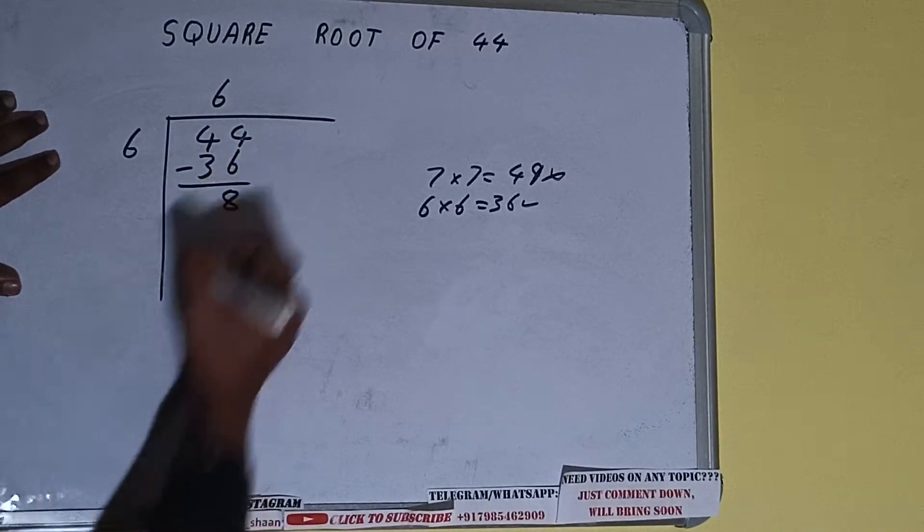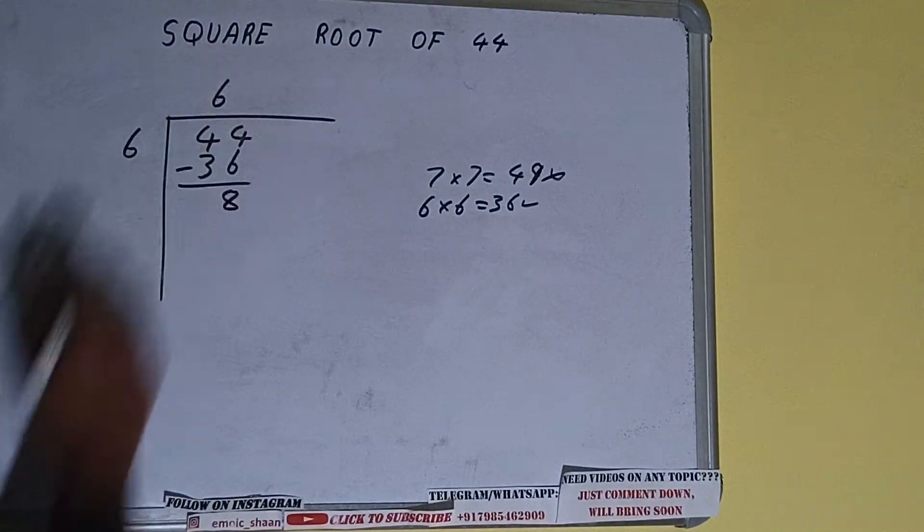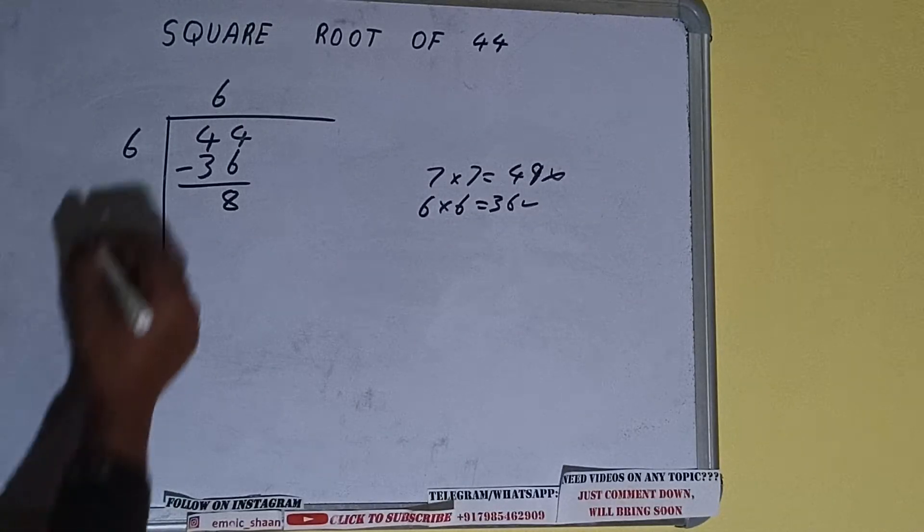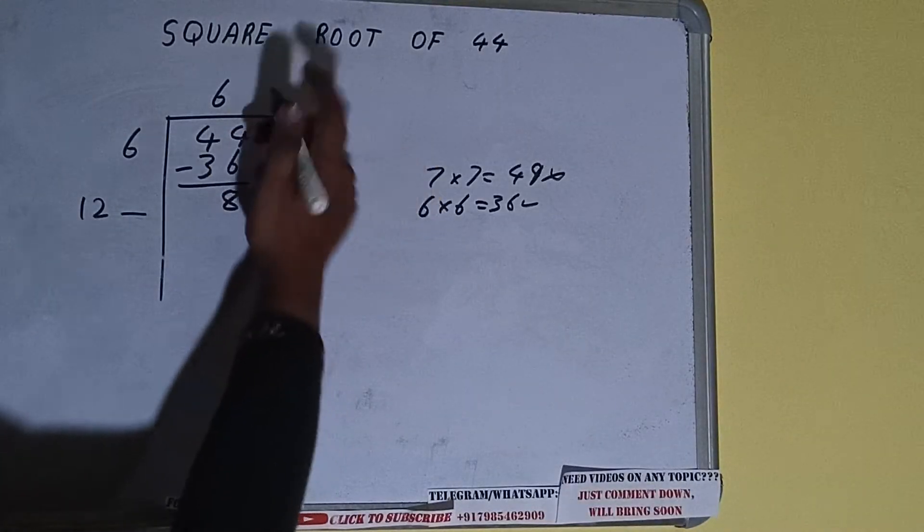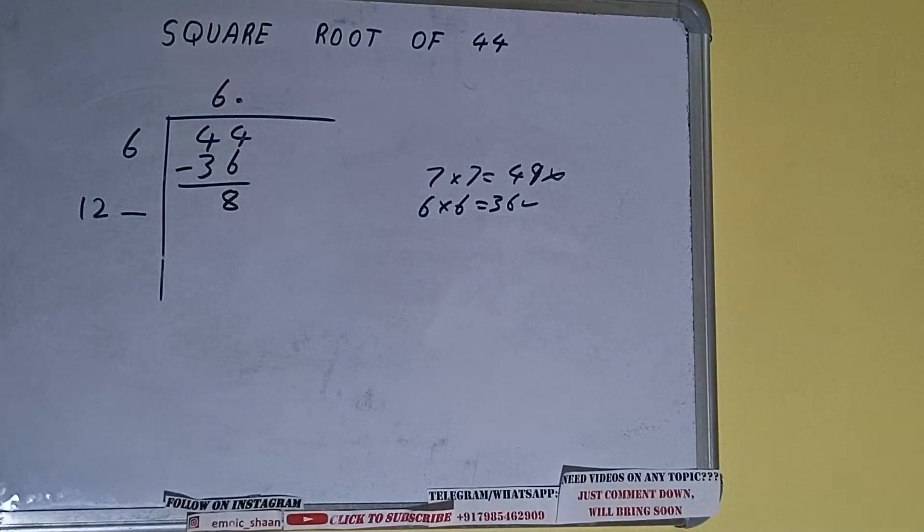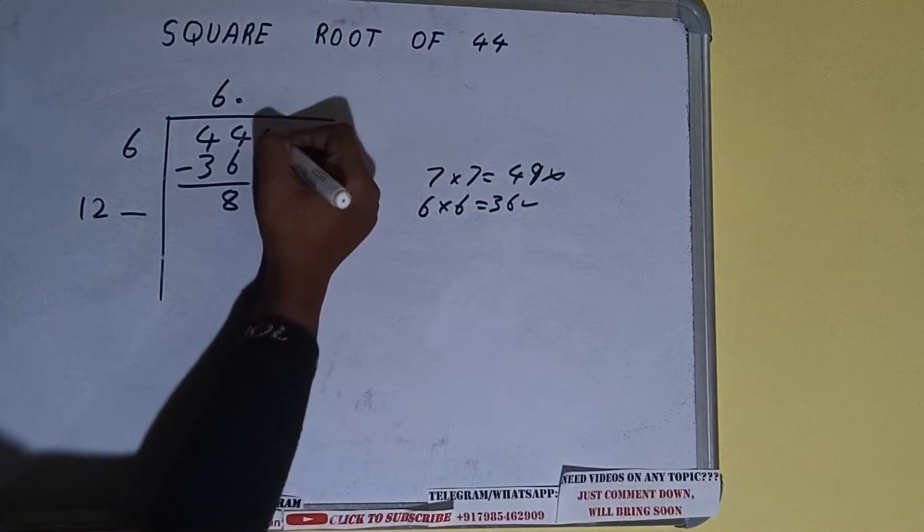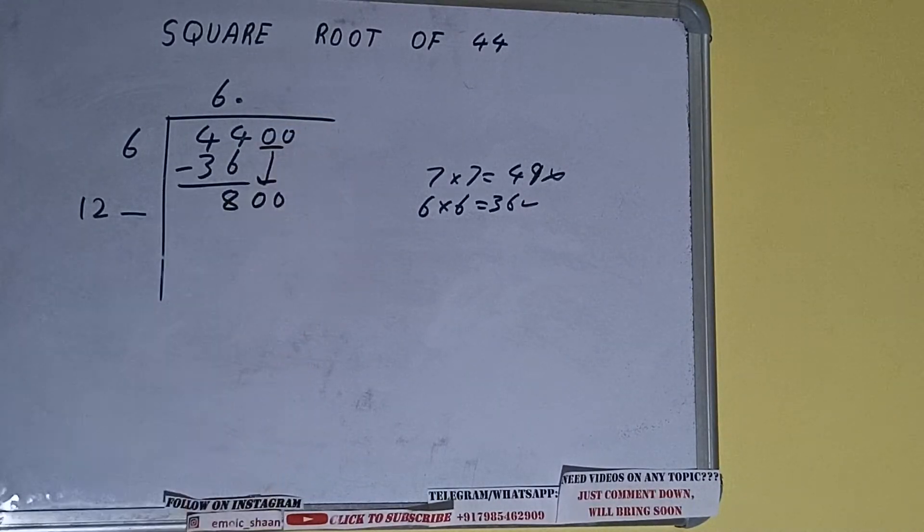Subtract, 8 will be left. Now we need 6 into 6, so add both. So 6 plus 6 is 12. Keep a digit extra and this number we need to make it big, but we don't have more pairs, so we'll put decimal. Once we put decimal, we can bring pair of zeros down and number will become as 800.